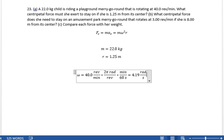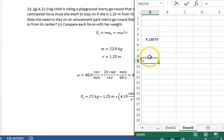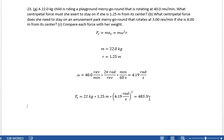And so let's put it all together. The centripetal acceleration is 22 kilos times 1.25 meters times 4.19 radians squared. 482, 483 newtons. 483 newtons.